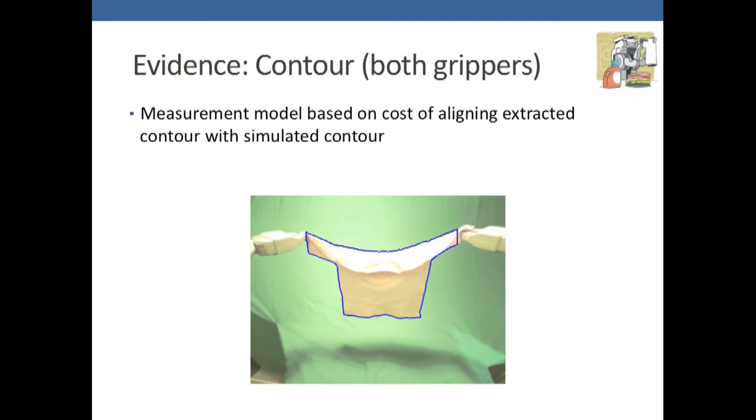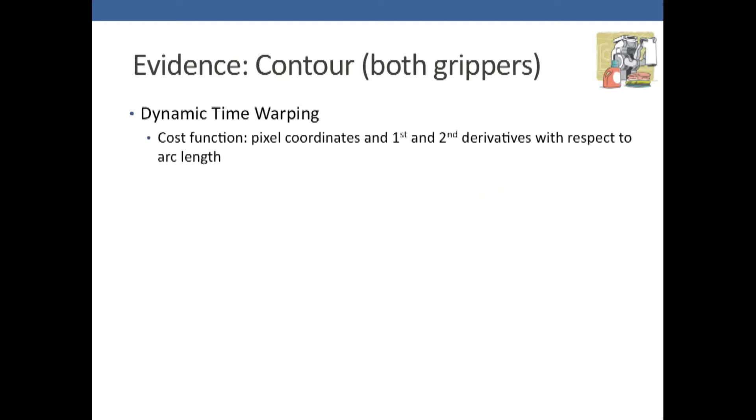When you're holding it by two grippers, we extract the contour. The measurement model is based on the cost of aligning this extracted contour with the simulated contour. To align the extracted contour with the simulated contour, we use dynamic time warping with a cost function based on the pixel coordinates and the first and second derivatives of the pixel coordinates with respect to arc length. Here you see an example alignment where blue is the extracted contour and yellow is the simulated contour.